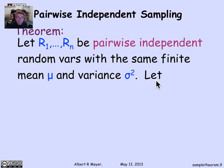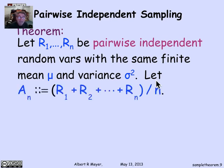We actually proved a precise quantitative theorem that says that if r1 through rn are pairwise independent random variables with the same finite mean mu and variance sigma squared, and we let A_n be the average of those n variables...